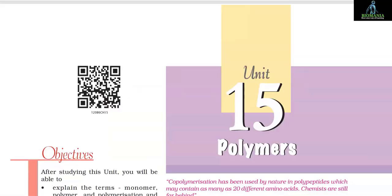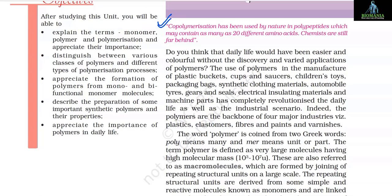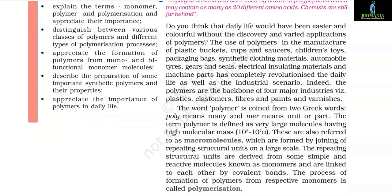Unit 15: Polymers. Co-polymerization has been used by nature in polypeptides which may contain as many as 20 different amino acids. Chemists are still far behind.